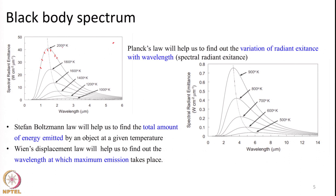Planck's law tells us, for example, if an object is at 2000 Kelvin, what is the energy emitted at 1 micrometer, at 2 micrometers, and so on. Stefan-Boltzmann law gives us the total area under the curve. We can also note that for each curve there is one particular wavelength at which the peak emission occurs, marked here in red circles, and this characteristic peak wavelength is given by Wien's displacement law.